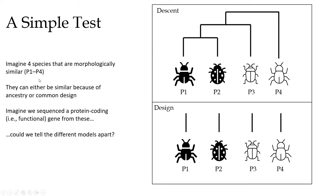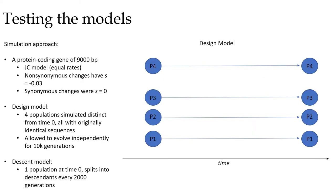So imagine four species, you can say they're morphologically similar. It doesn't really matter, but they're four species that we want to build a phylogeny for, and we'll call them P1 through P4. And here they are for a model of descent where there actually is a relationship between them. And then here they are for design with design being that these are independently created. There is no relationship between them. So now imagine we sequenced a protein coding gene, i.e. some functional gene. And we want to know, can we tell these two models apart? So what we're going to do is a simulation approach. And what I did is I randomly simulated a 9,000 base pair region of ATCs and Gs. And I used this as the ancestral sequence for both models. So for both models, the ancestral sequence is exactly the same, 9,000 base pairs long.